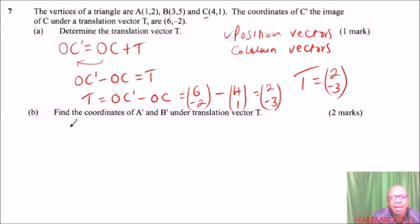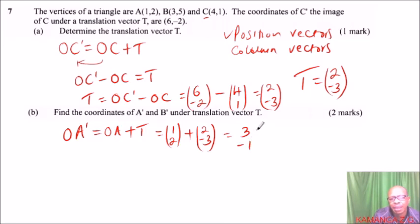We look at part B. Find the coordinates of A' and B' under the translation vector T. So, just like we have done here, our A', OA' can be obtained by getting OA plus the translation vector. And of course, we have that. Our OA is (1,2), that is the position vector of OA, and we add to the translation vector which is (2,-3). So, 1 plus 2, that will give you 3. 2 plus -3, that will give you -1.